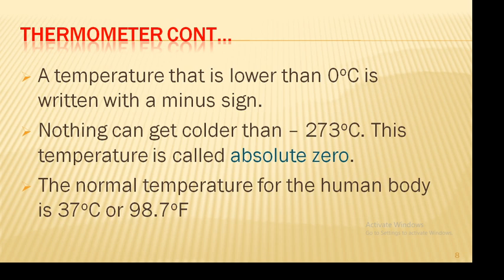The normal temperature for the human body is 37 degrees Celsius or 98.7 degrees Fahrenheit. This temperature stays the same whether the day is very hot or very cold, because humans along with other mammals are warm-blooded.